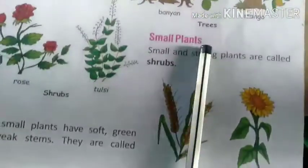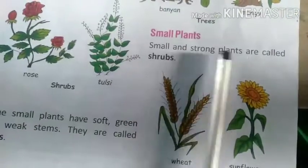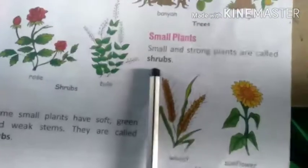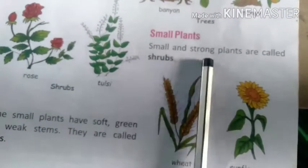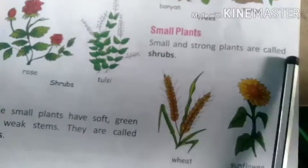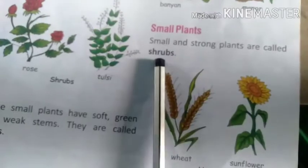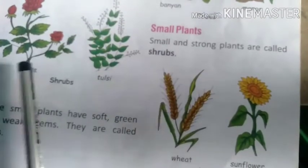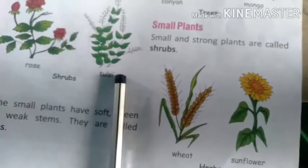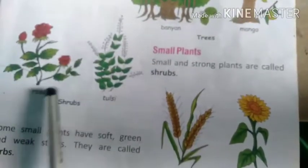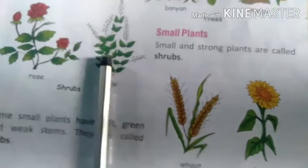Small plants. Small and strong plants are called shrubs. What are they? Rose and tulsi are called shrubs.